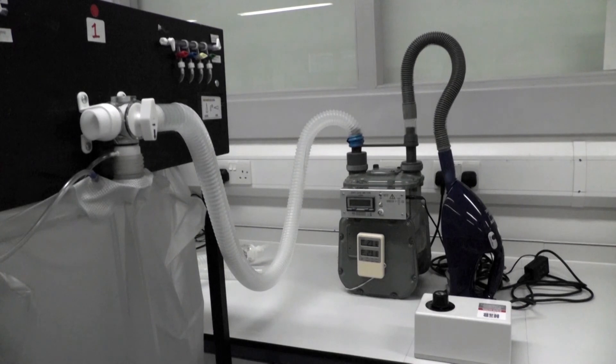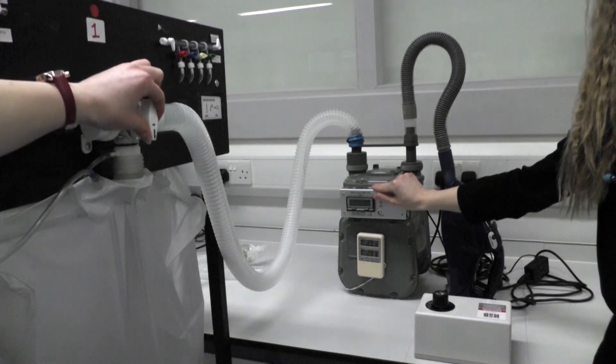Give the bag a little shake to make sure all the air is out and wait until the numbers on the dry gas meter stabilize before taking your reading of the volume of air in liters. Then turn the valve back to its original position and the vacuum pump dial back to zero.